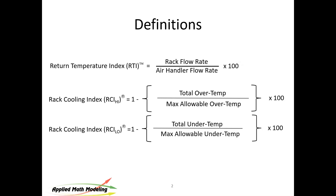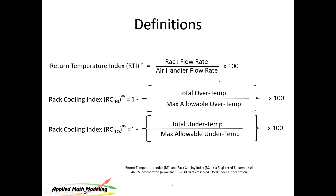The other metric is Rack Cooling Index — RCI. There are two: RCI high and RCI low. RCI low is not really an issue, but RCI high tells you the number of hotspots and how far out of compliance you are with recommended rack inlet temperatures. We calculate these metrics in CoolSim's output report. A perfect design has all metrics at 100 — no hotspots, no excess air, and inlet temperatures within ASHRAE recommended range.